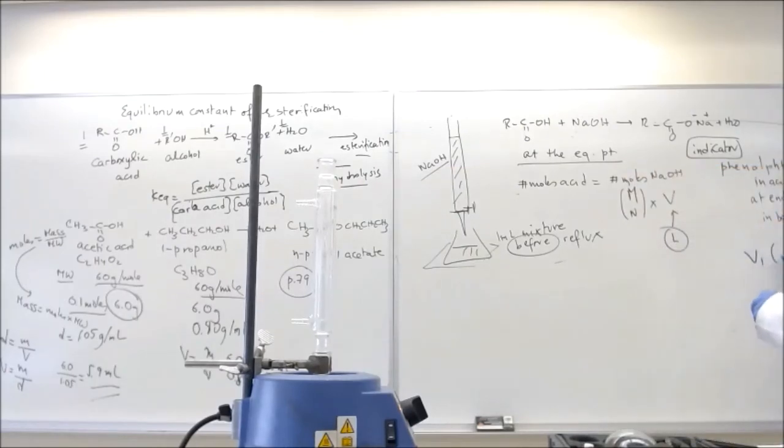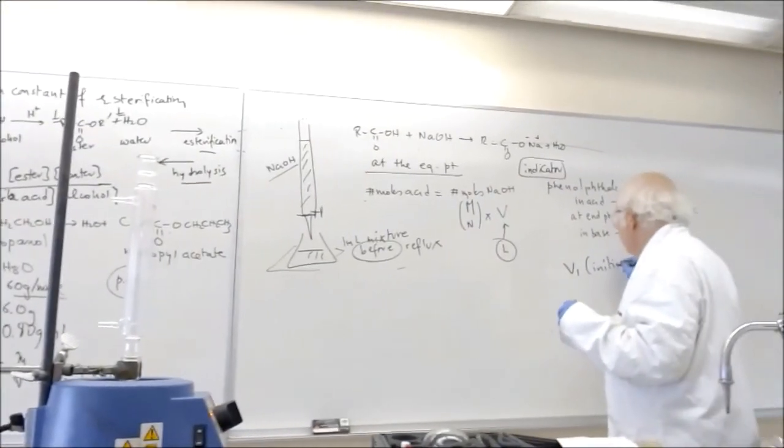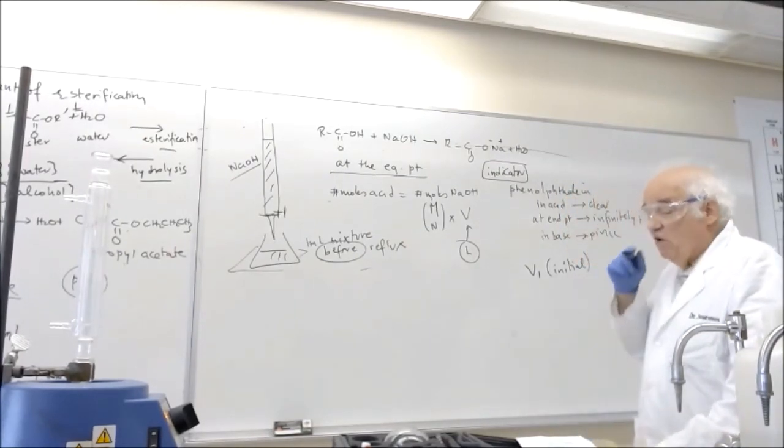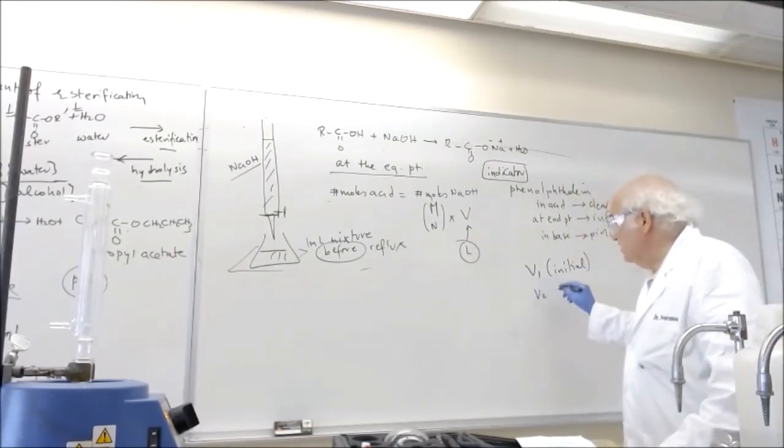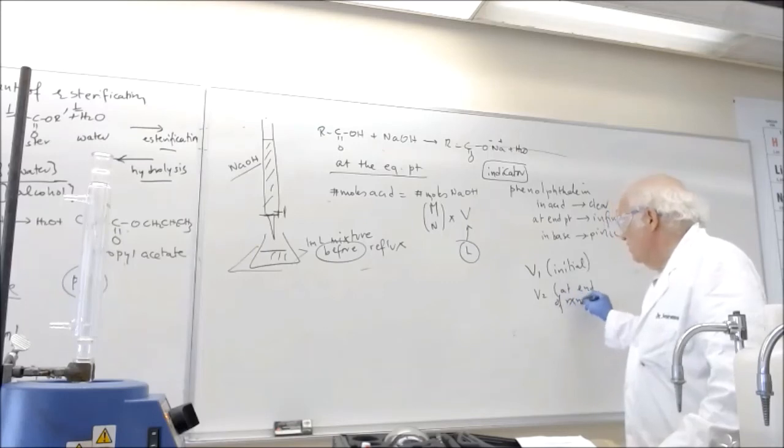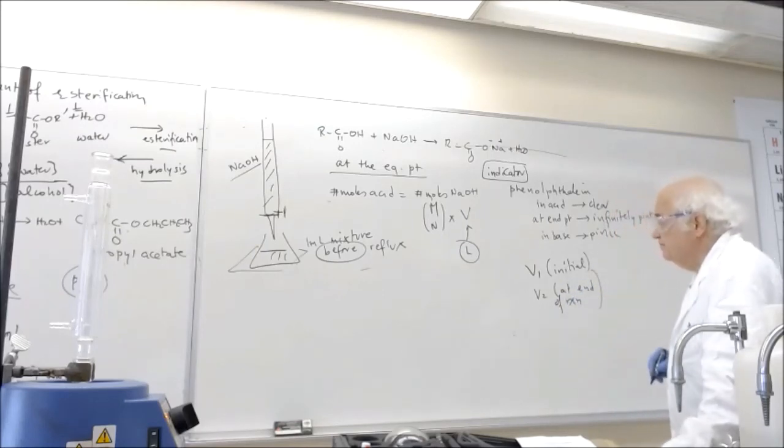And so therefore you will have one titration, which is the initial titration, which is V1. And then after that, you take one more milliliter, and you titrate it, which is at the end of reaction. So you have V2. So you have V1 and V2.